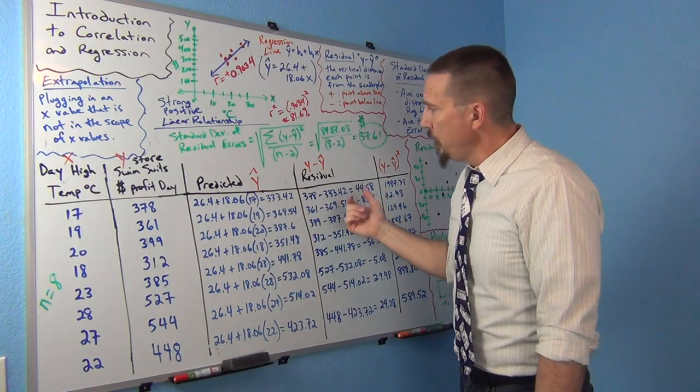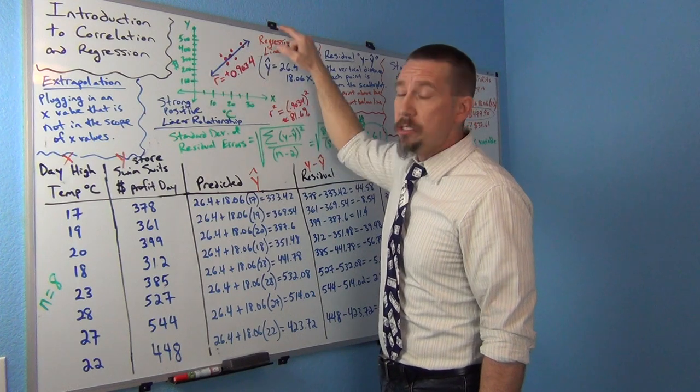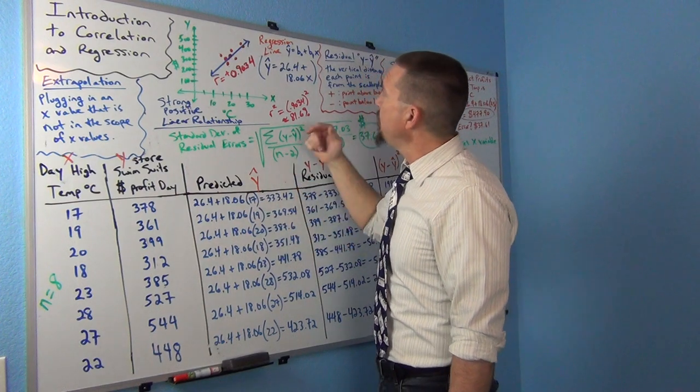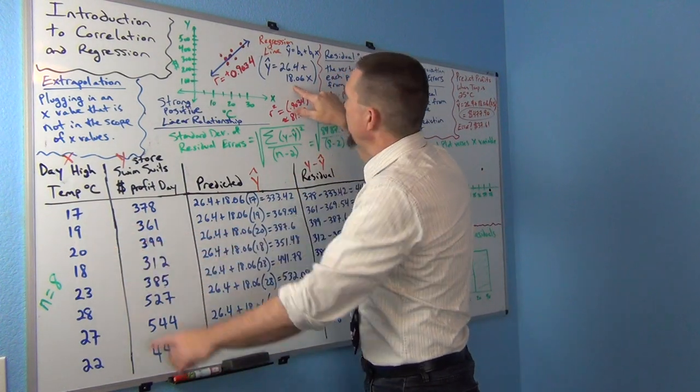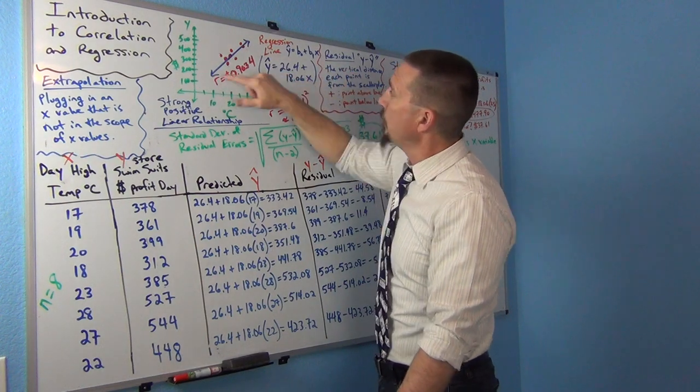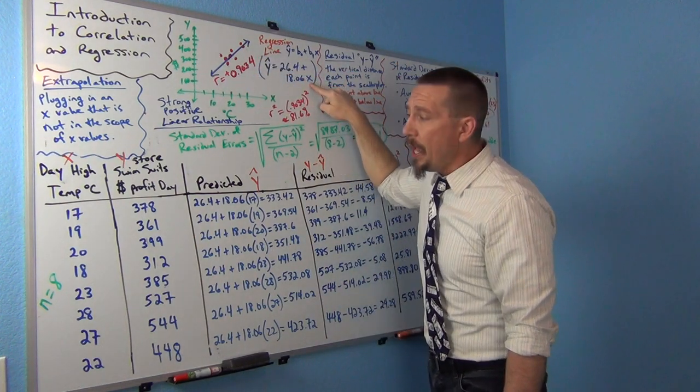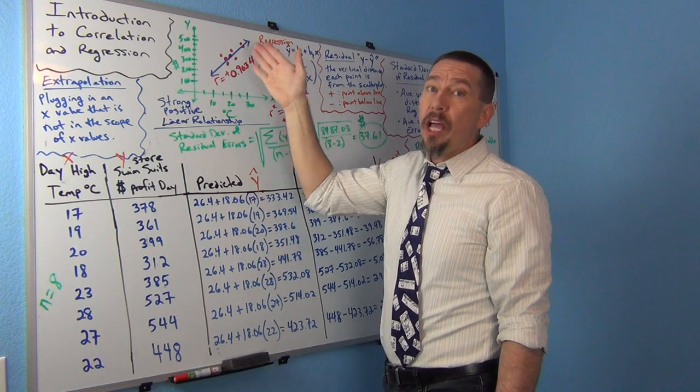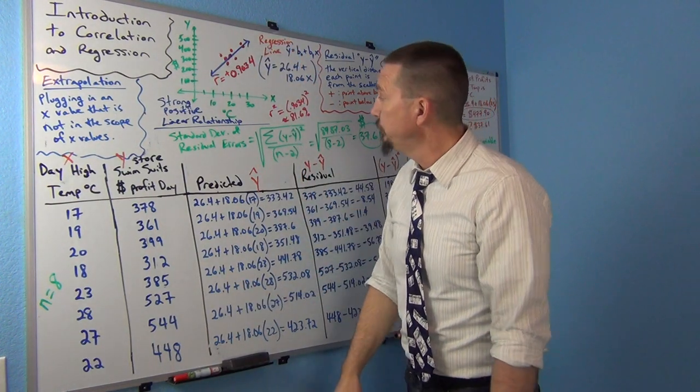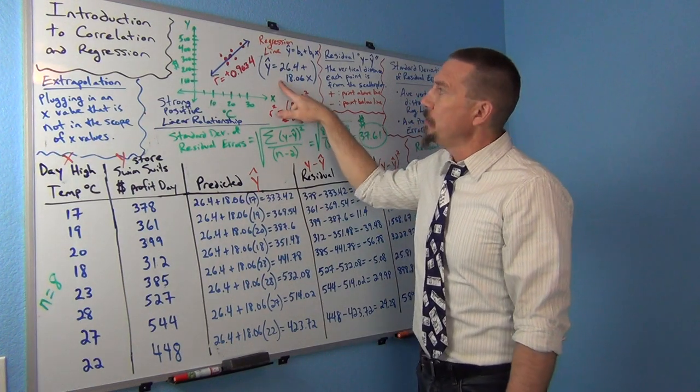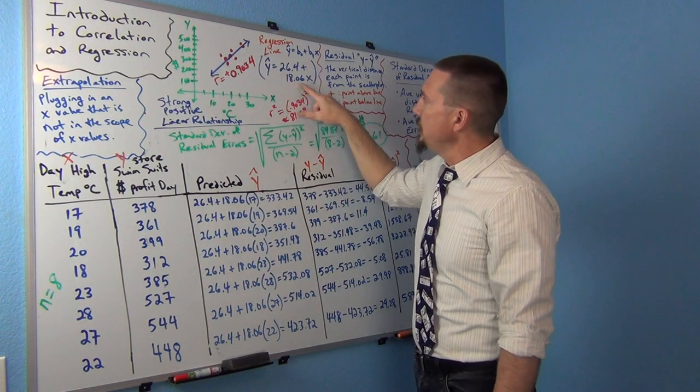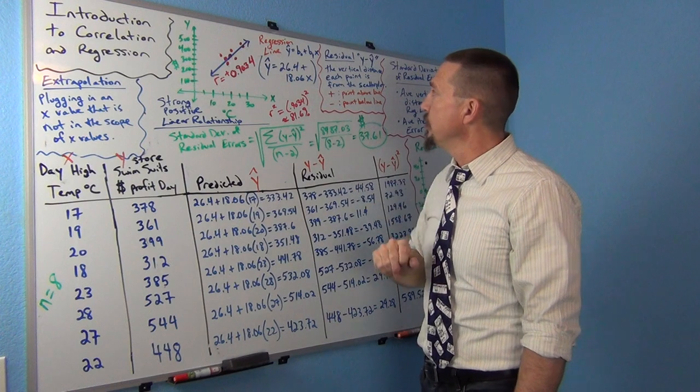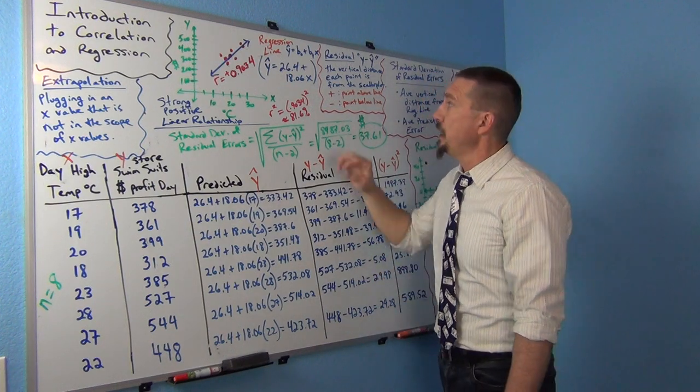So when you're calculating the residual, what the computer does is, the computers by the way all do this. I'm showing you all the calculations, but really the computers do this in a split second. But really what you're going to do is, you need to figure out what the Y value is on the line. That's called the predicted Y value, or Y hat. So to do that, I'm going to basically plug in each of my X values into the regression line formula. So this is the formula of this line. If I replace the letter X with the number that X was equal to, I can find the Y value on the line for that X.